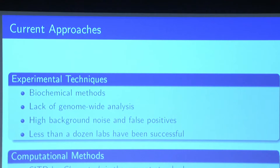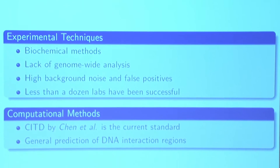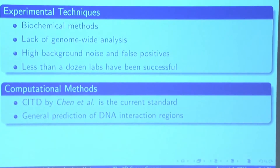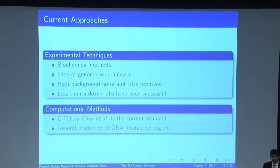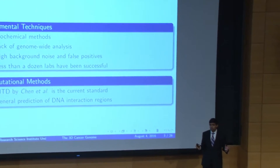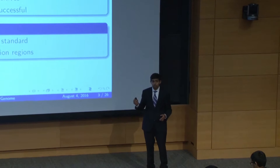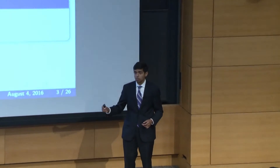So we've moved on to computational methods. The gold standard right now is CITD, developed by Chen et al just a few months ago. However, there's one key flaw with CITD: it generally predicts large regions of DNA interaction and doesn't actually pinpoint where individual loops occur and what genes are being affected. And that's the information that we need in order to better understand how genetic mechanisms drive cancer proliferation.